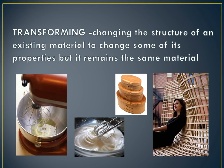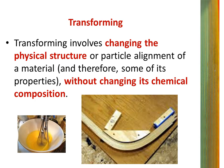The second of these is transforming. It is seen as changing the structure of an existing material to change some of its properties, but it remains the same material. Transforming involves changing the physical structure or particle alignment of a material and therefore some of its properties without changing its chemical composition. For example: felting, beating an egg white, heat treating a metal to harden or anneal it, or steaming timber to soften its fibres so it can be manipulated.